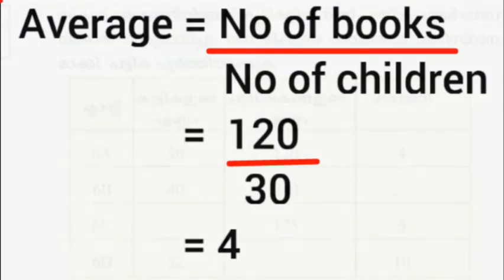We take the average formula: number of books divided by number of children. We get 120 divided by 30, which equals 4. So the average is 4.